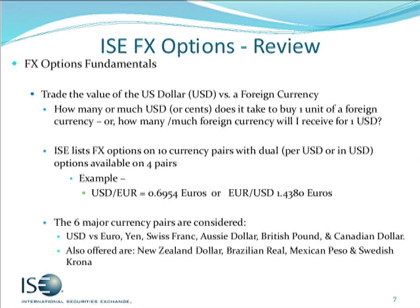The six major currency pairs are an important thing to keep in mind. These majors are the most traded — they have the most volume in the spot market, and that usually translates to the most volume in the options market as well. The six majors are: euro versus U.S. dollar, yen, Swiss franc, Aussie dollar, British pound, and Canadian dollar.